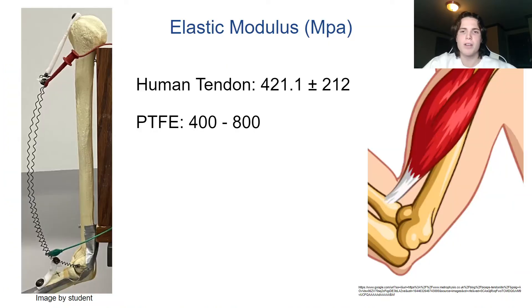For comparison, the elastic modulus of human tendons is 421.1 plus or minus 212 MPa, and the elastic modulus of PTFE is 400 to 800 MPa.